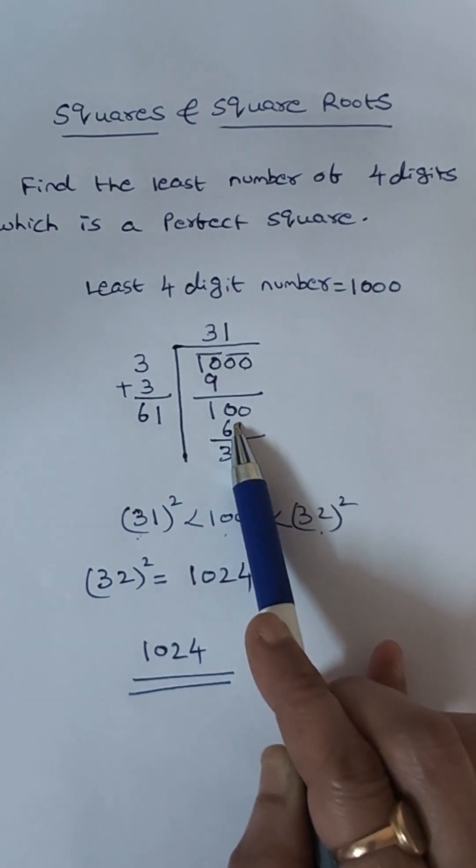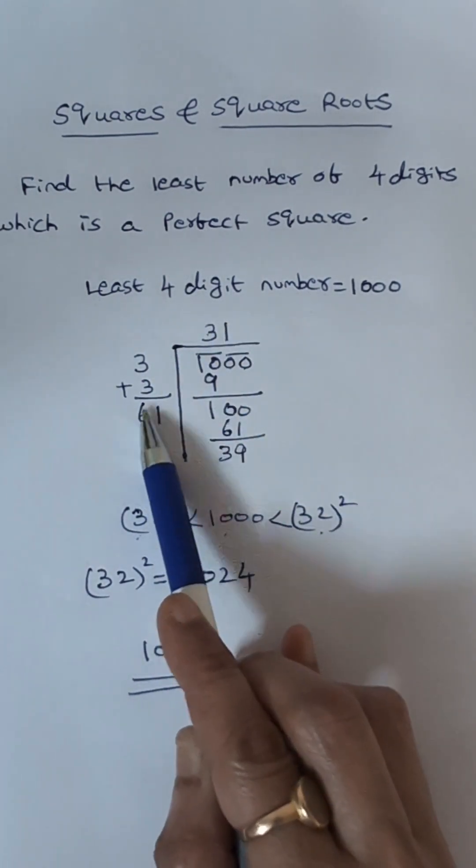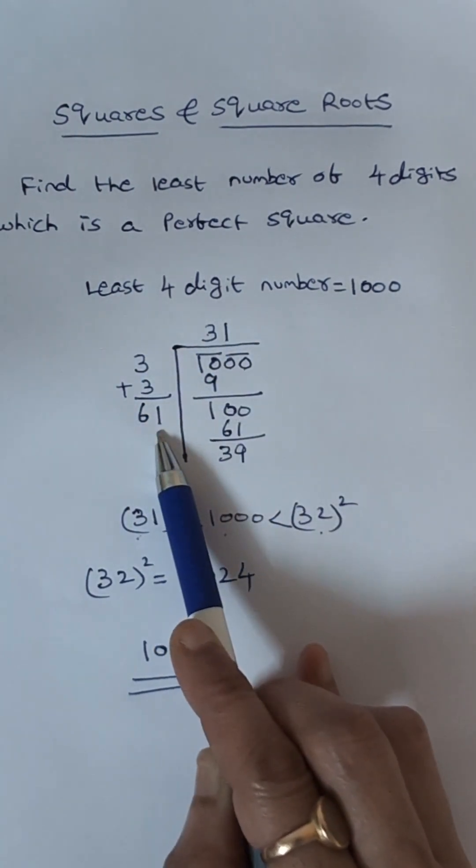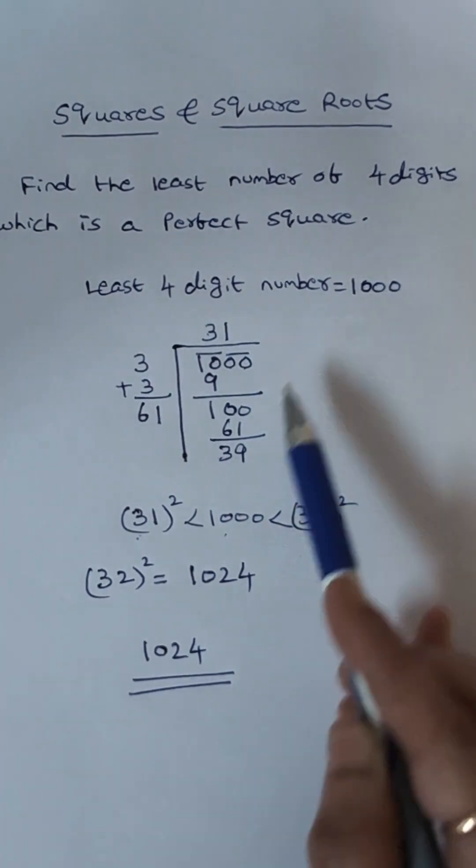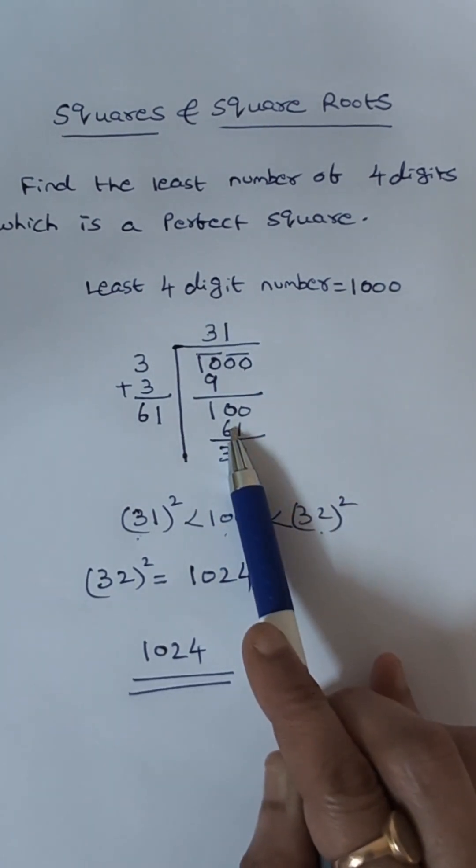Bring these two 0s down. Now add this 3 here. So 3 plus 3 is 6. So next digit will be 1 because 61 into 1 is 61. 62 into 2 nahi kar sakte because you will get a number greater than 100.